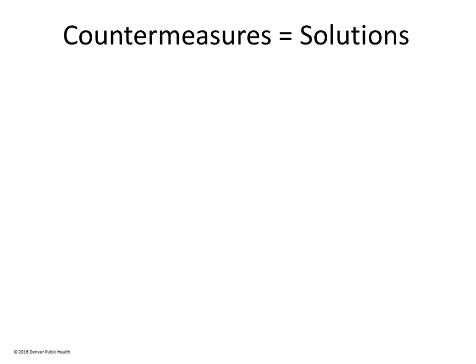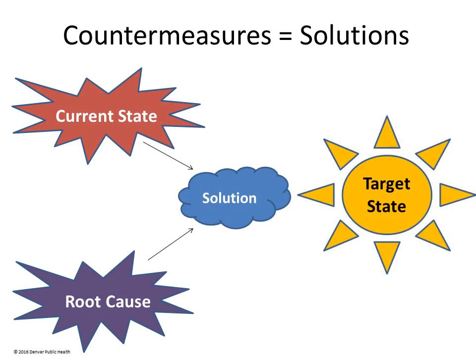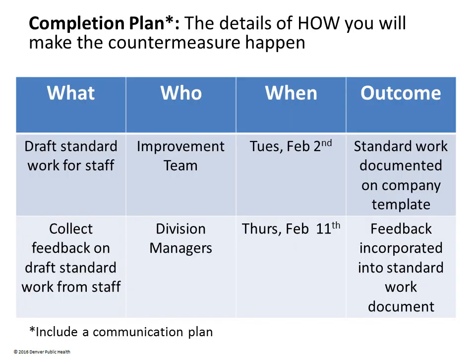Countermeasures are another word for solutions. Your solution should help you move from the current state to the target state and address specific root causes. You may consider pilot testing a proposed solution before changing a process completely. For example, the Pig Drawing Company may try out new standard work with one group of employees for a defined amount of time to see if it improved the return rate and get employee feedback. Any pilot will be listed under rapid experiments on the A3. Once you have decided on your countermeasure and conducted any pilots, the completion plan documents the small steps to implement it — including specific action items, who is assigned, when it is to be completed, and what the outcome should be.